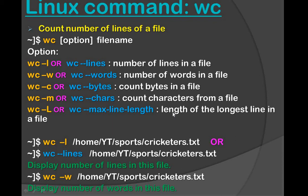To find the length of the longest line in a file, we can use wc -L (capital L) or wc --max-line-length. By this way we can calculate the length of the longest line in a file. So the wc command is used for multiple purposes.